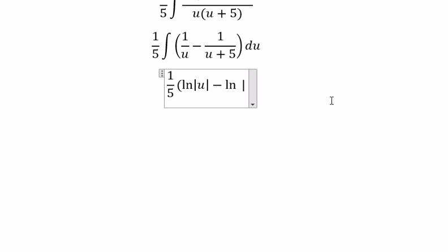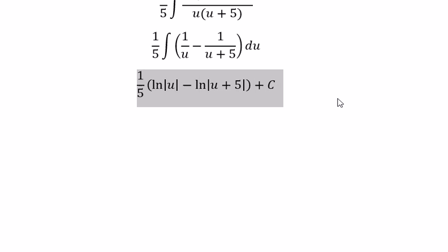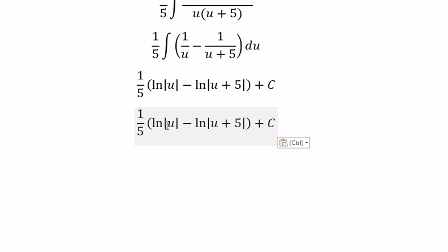u is e to the power of x, so we substitute back to get 1 over 5 times x minus ln of e to the power of x plus 5 plus C.